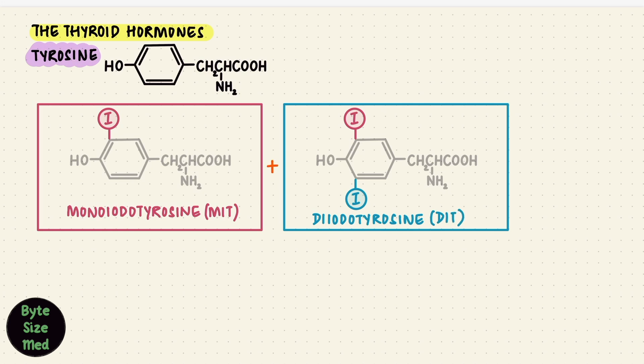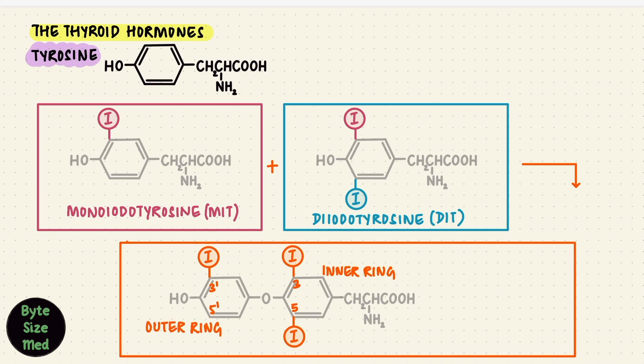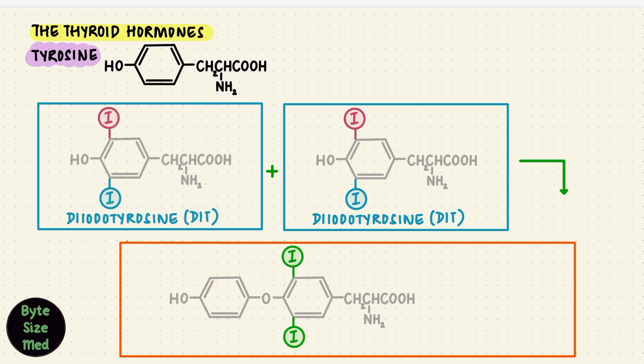Now we'll try joining them. If we put one monoiodotyrosine with one diiodotyrosine together, we get a structure that looks something like this, with three iodine additions. This position is three and five of the inner ring, and this is three prime and five prime of the outer ring. That makes this structure three, five, three prime triiodothyronine, abbreviated as T3. Instead, if we put two diiodotyrosines together, we get four additions. That's three, five, three prime, five prime tetraiodothyronine, or thyroxine, abbreviated as T4.